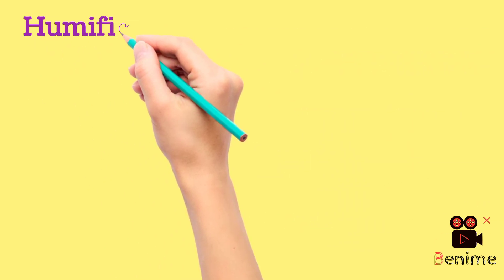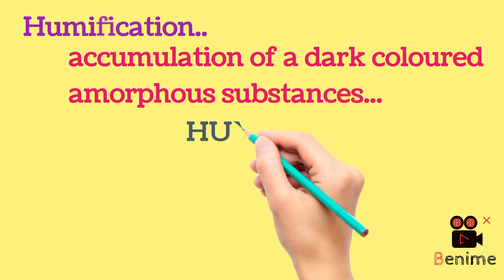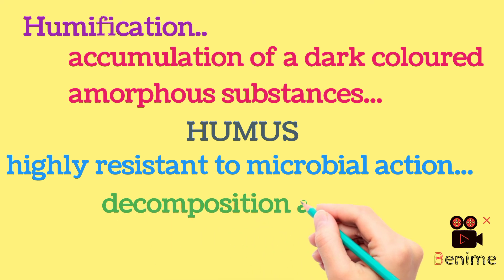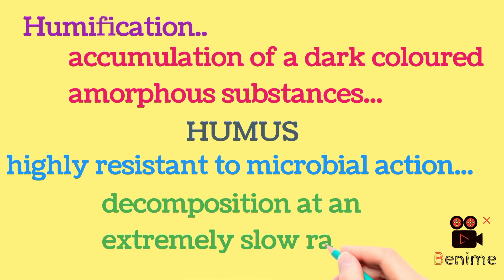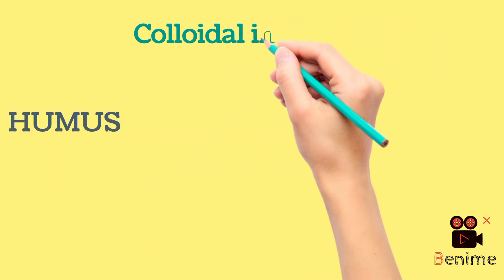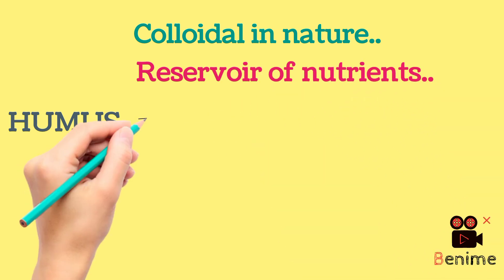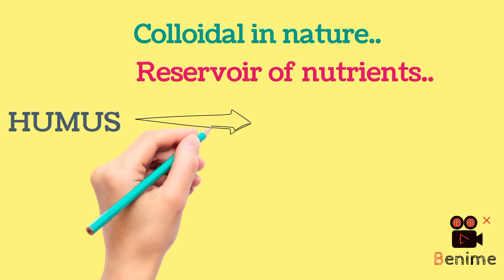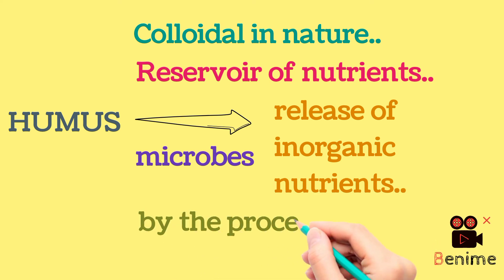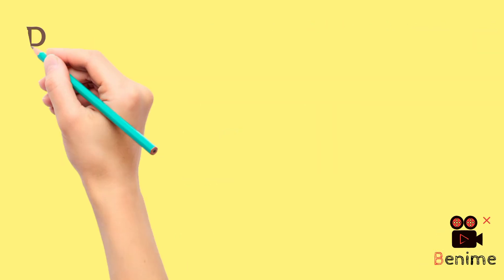Humification and mineralization occur during decomposition in the soil. Humification leads to accumulation of a dark-colored amorphous substance called humus, which is highly resistant to microbial action and undergoes decomposition at an extremely slow rate. Being colloidal in nature, it serves as a reservoir of nutrients. The humus is further degraded by some microbes, and release of inorganic nutrients occurs by the process known as mineralization.